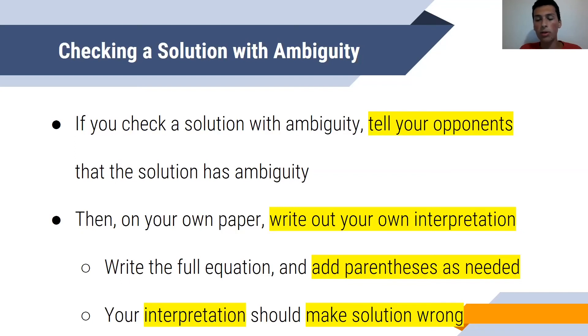Your interpretation should make the solution wrong. Remember, you can also do this on the goal side too, but the one thing you can't do is interpret the goal in a way that makes it illegal. Just be careful about that. You can interpret the goal in ways that make it a different number, but you cannot interpret it as being illegal.